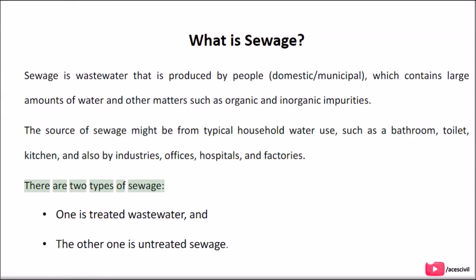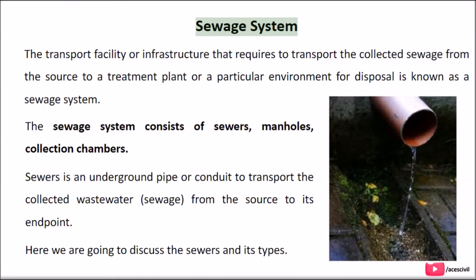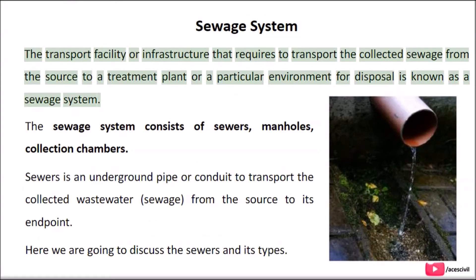There are two types of sewage: one is treated wastewater, and the other one is untreated sewage. The transport facility or infrastructure required to transport the collected sewage from the source to a treatment plant or a particular environment for disposal is known as a sewage system.